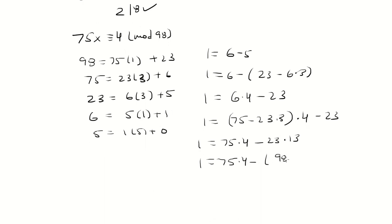And substituting for 23, that is 98 minus 75. So we have 4 copies of 75, 13 copies of 75. That's going to give us 17 copies of 75.